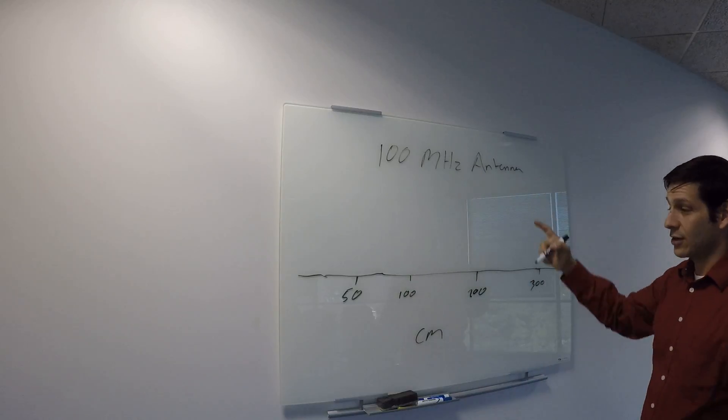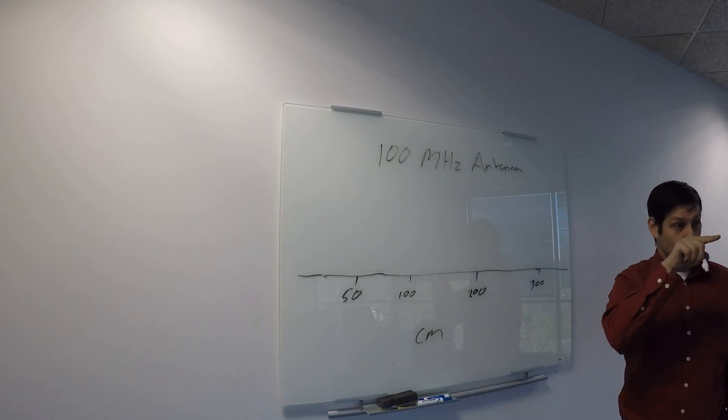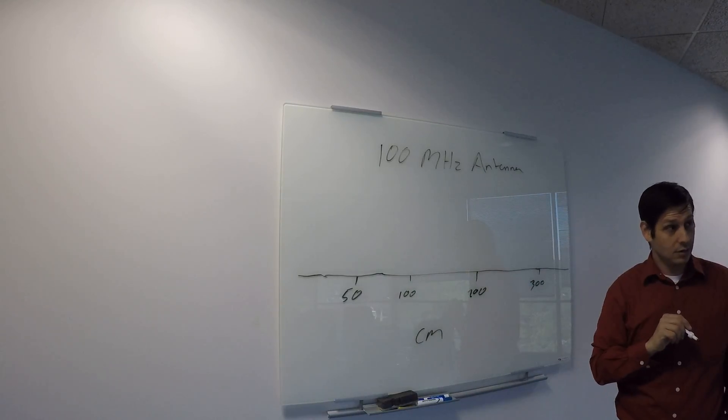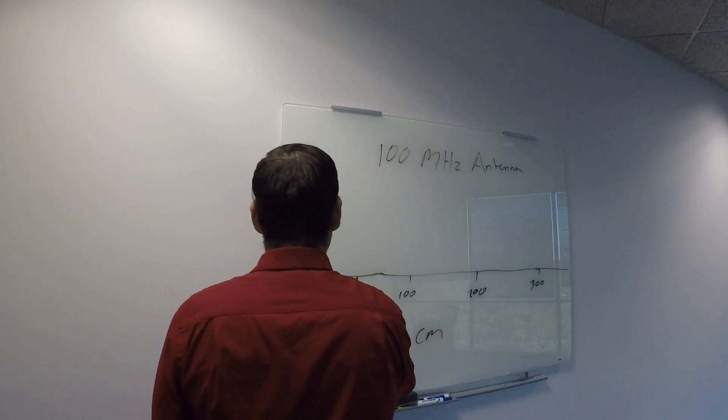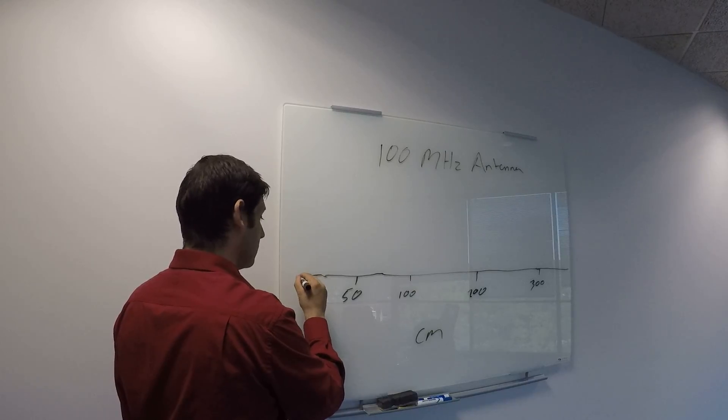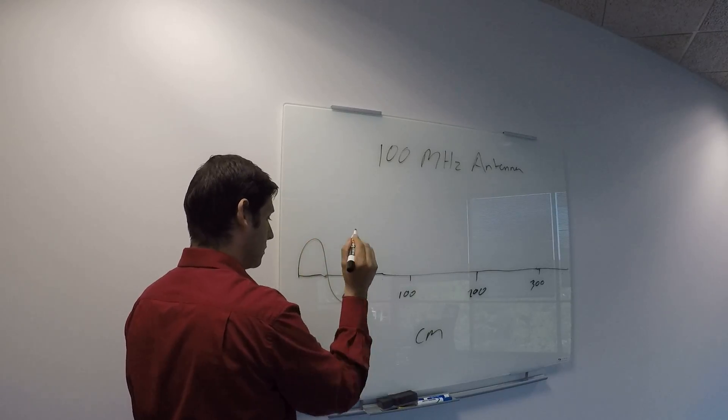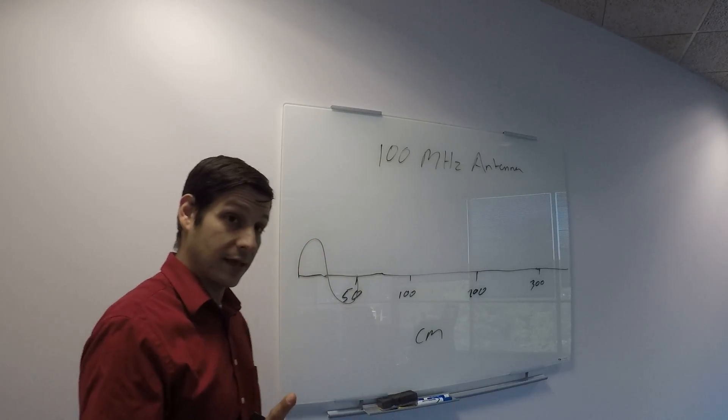You have a 100 megahertz antenna. You're in Georgia clay. Okay? Georgia wet clay. This is your signal. This is your wavelength. Okay? That's your wavelength.